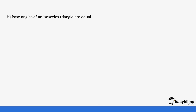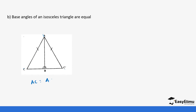Another property is that the base angles of an isosceles triangle are equal. Let's deduce what happens here. We know that line AC equals line AC prime because these two sides are equal in an isosceles triangle. So line AC equals AC prime. That also means BC equals BC prime, because the mirror line divides line CC prime into two equal parts, forming two equal triangles. So CB equals BC prime.